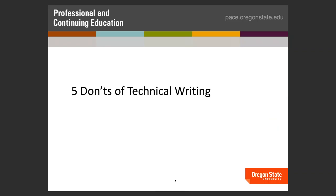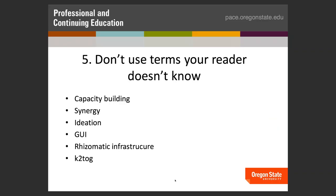We're going to go through five do's and don'ts of technical writing, starting with the five don'ts. The first don't: don't use terms that your reader doesn't know. Examples include capacity building, synergy, ideation, GUI, rhizomatic infrastructure, and K2TOG. These are terms that can be used in many ways and could probably use some explanation. When I was working in the nonprofit industry, 'capacity building' was used constantly as a buzzword and it took me months to understand it means building sustainable infrastructure for organizations.